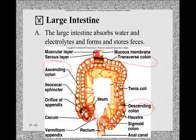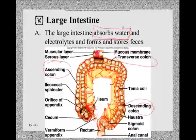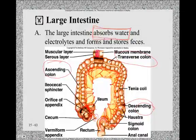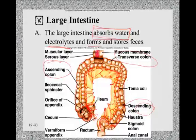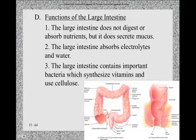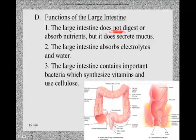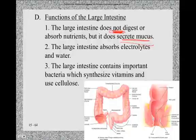The main function of the large intestine is to absorb any excess water not absorbed in the small intestine, and to absorb some extra electrolytes. Anything not absorbed forms feces, and the large intestine stores feces before they're released into the rectum. Importantly, the large intestine does NOT digest or absorb nutrients - only electrolytes and water. It does continue to secrete mucus like the small intestines.